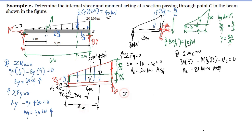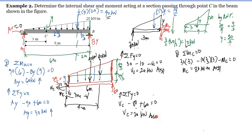Summation of vertical forces equal to zero, taking upward as positive. VC is directed upward, so it is positive. Minus the resultants 40 and 40, totaling 80, directed downward. Plus the 60 kilonewton reaction BY upward, equals zero. Solving, VC equals negative 20, which means VC is positive 20 kilonewtons — the same answer as from the left portion.